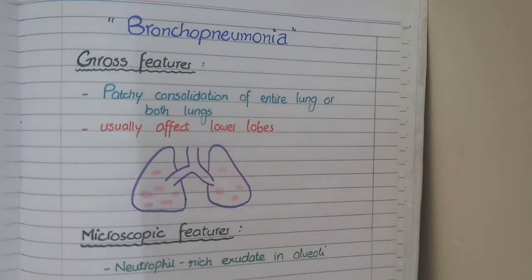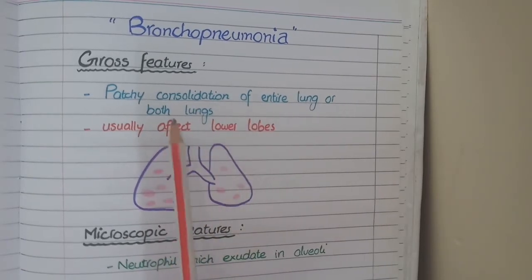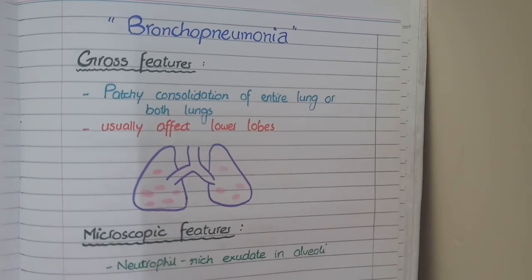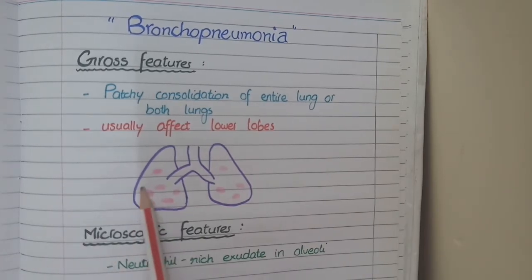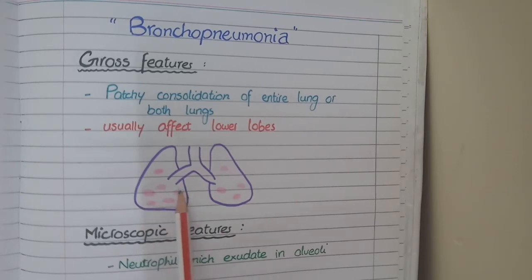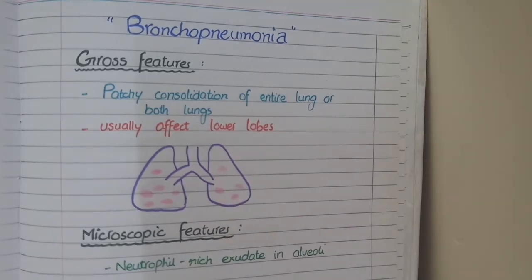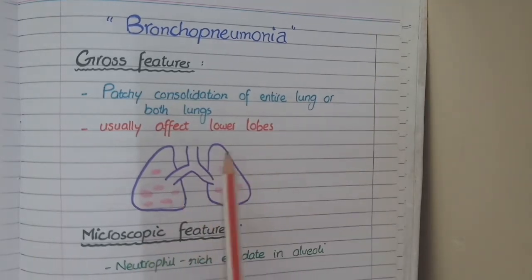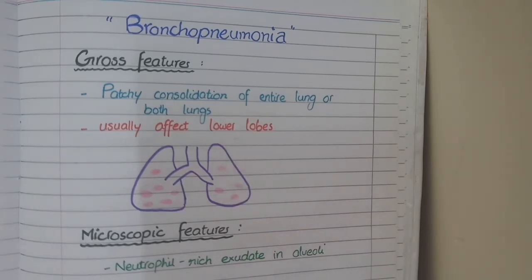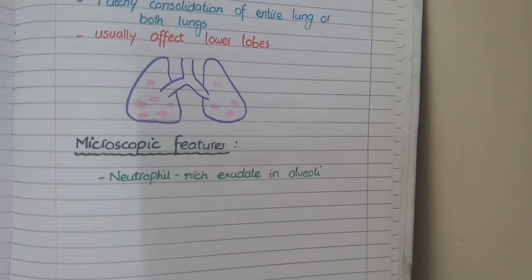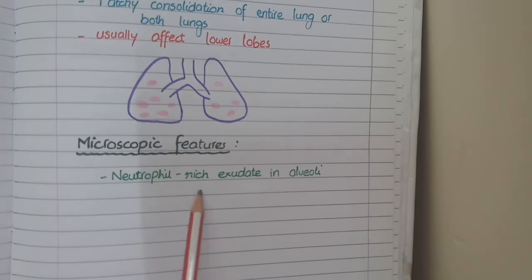The second pattern of pneumonia, other than lobar pneumonia, is bronchopneumonia. In bronchopneumonia, instead of involvement of one lobe, there is patchy involvement of the entire lung or even both lungs, as shown in this diagram. The difference is that in lobar pneumonia, one particular lobe is affected, whereas in bronchopneumonia the effect is at the level of the whole lung in the form of patches. This patchy involvement usually affects the lower lobes. On microscopic view, the main feature is neutrophil-rich exudate in the alveoli. There are no specific stages in bronchopneumonia.